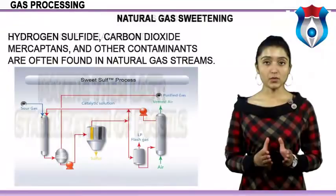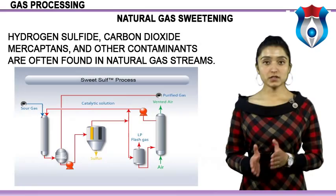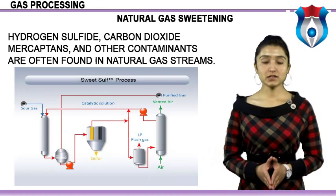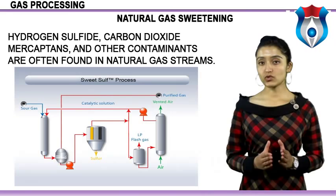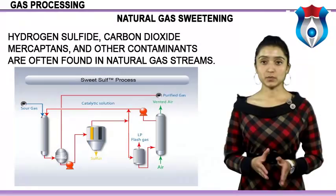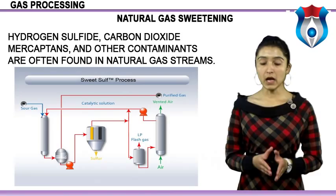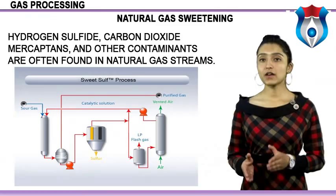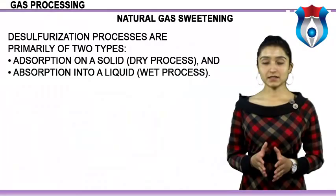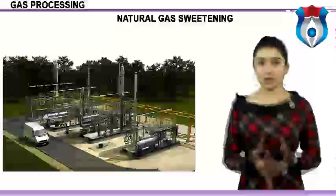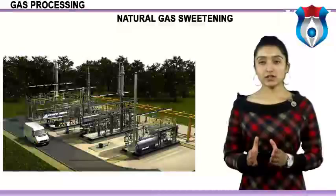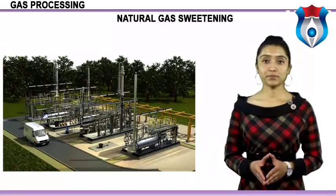Natural gas sweetening addresses hydrogen sulfide, carbon dioxide, mercaptans, and other contaminants often found in natural gas streams. Gas sweetening processes remove these contaminants so that the gas is marketable and suitable for transportation. The removal of H2S is accompanied by removal of CO2 and COS if present, since these have similar acid characteristics. Sweetening processes are primarily of two types: adsorption on a solid dry process, and absorption into a liquid wet process, both of which may be physical or chemical in type.